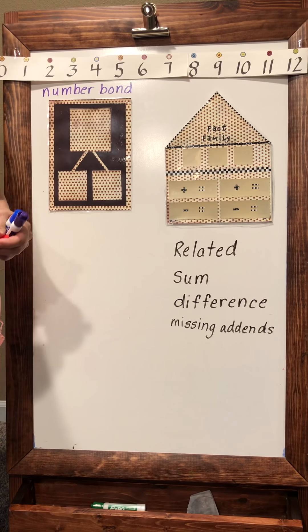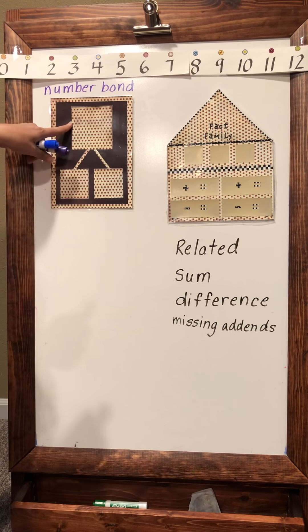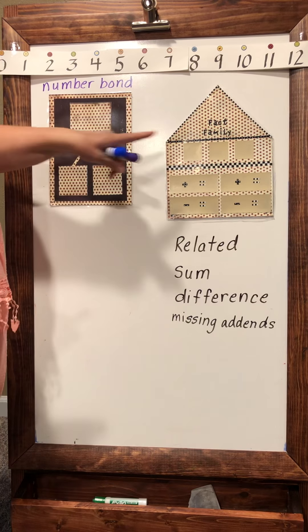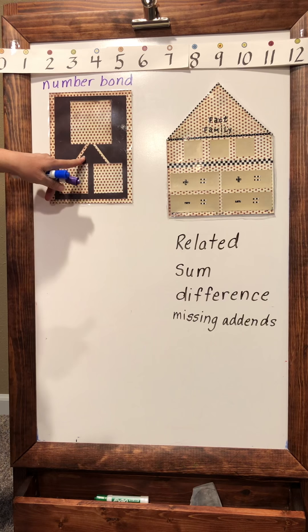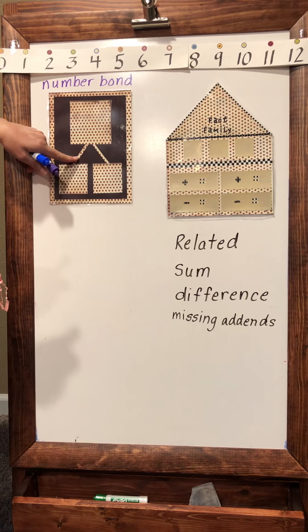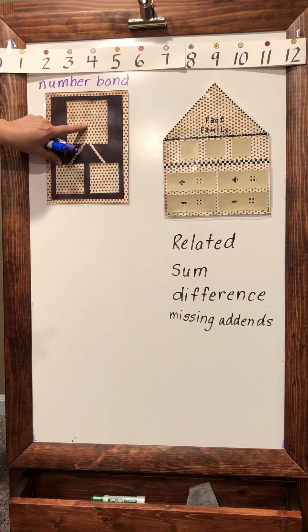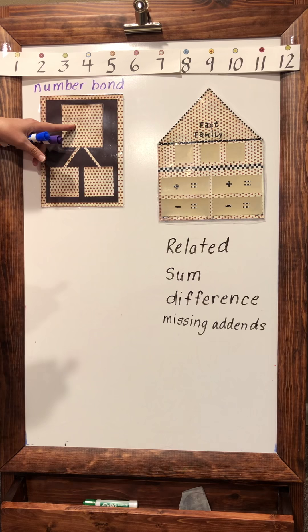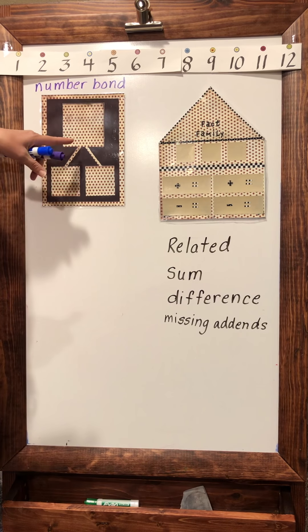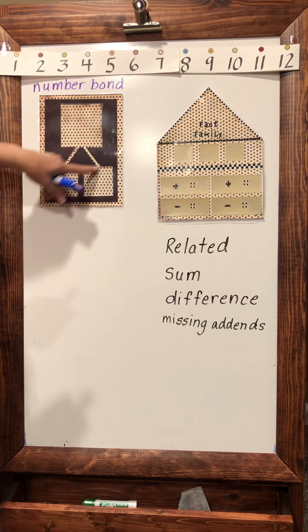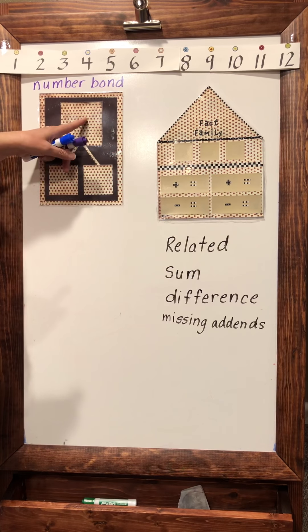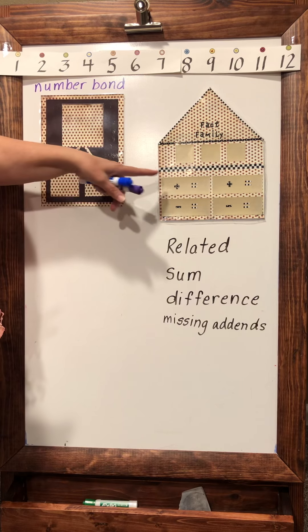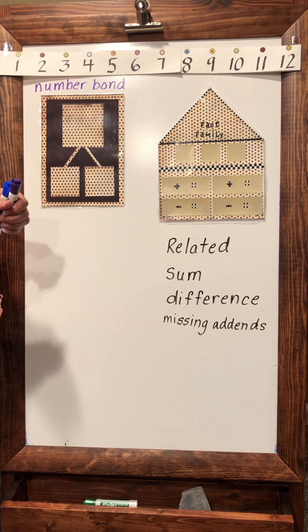During this lesson we're going to talk about number bonds and how fact families can be written from number bonds. This is a big thing for New York math. They use number bonds in all kinds of ways and problems, and this is one of the main reasons I wanted to share this with you. It's also a good way for your kids to practice their addition and subtraction.